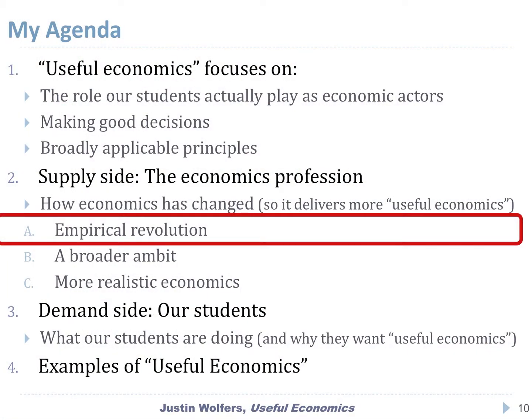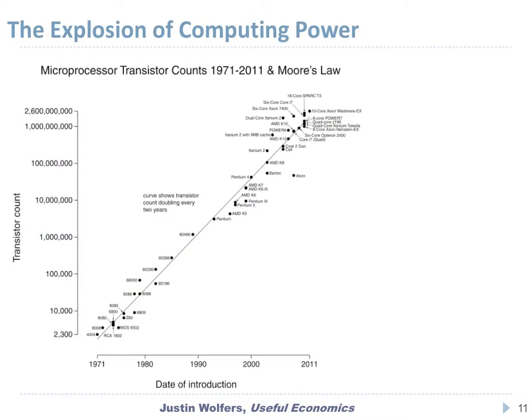I want to make two more pitches. This is in some sense a change from how I was taught economics, and I think it's a tremendous opportunity going forward — for two sets of reasons: supply and demand. Let's start on the supply side with the empirical revolution. This chart shows time on the horizontal axis and the number of microprocessors on each computer chip on the vertical axis. This is just Moore's Law — our computer processing power is doubling every couple of years, and there have got to be some opportunities that come out of that.